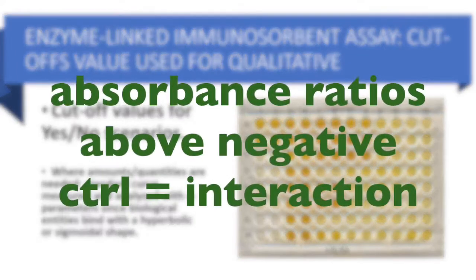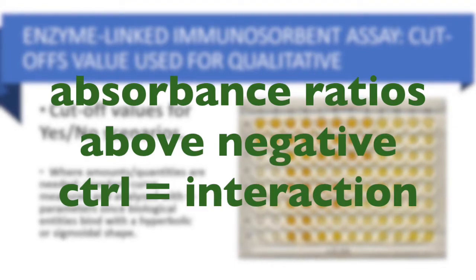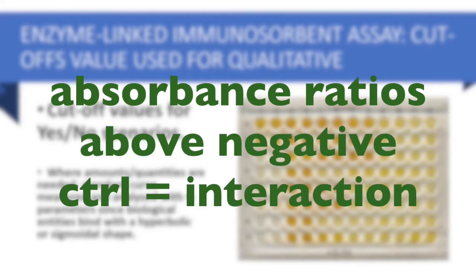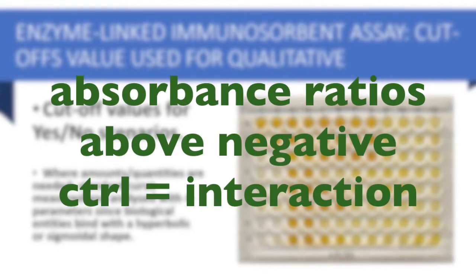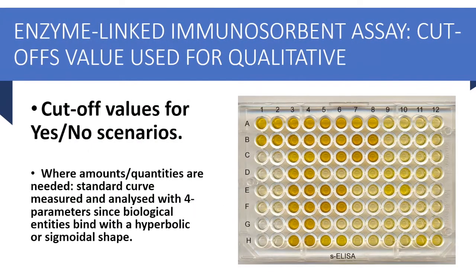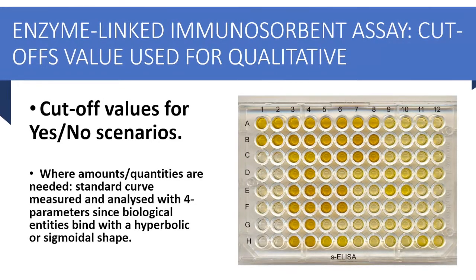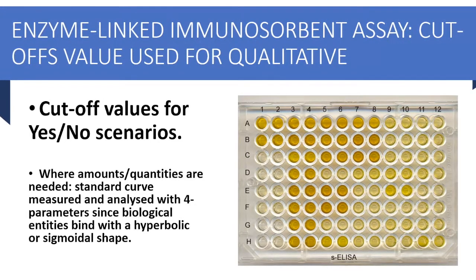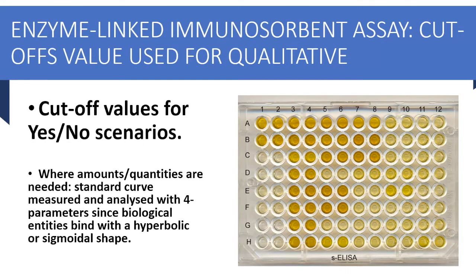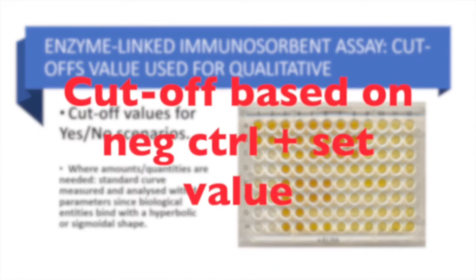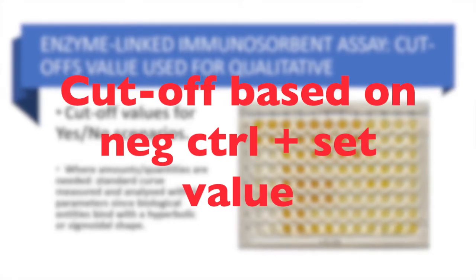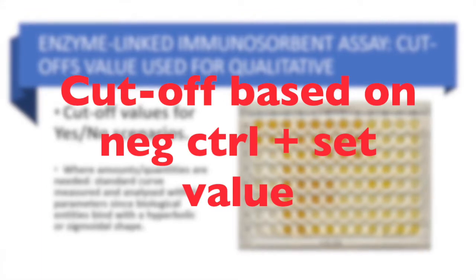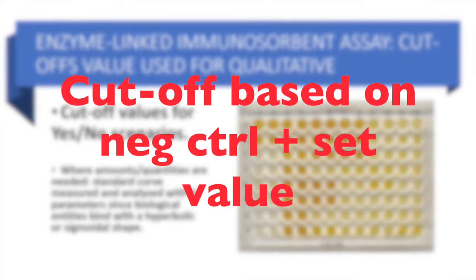Anything above that, a particular value will be calculated. It could be like a standard deviation above the average of the negative control, or two standard deviations, or three standard deviations, or a customized value based on the actual assay parameters. You do this in replicates so that you can determine the cut-off value for those to be considered as a proper interaction.